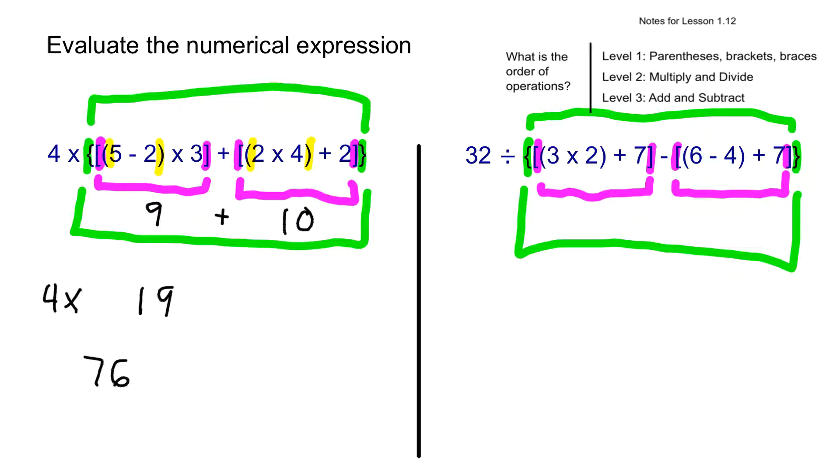And now we can get the third color out and say here are our parentheses group, the yellow group within the pink. So the pink's within the green. The yellow's within the pink. And all of that is something we're going to divide 32 by.